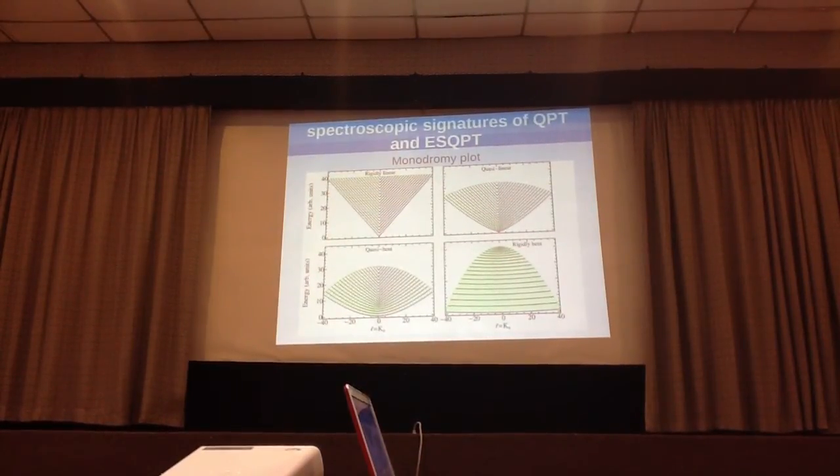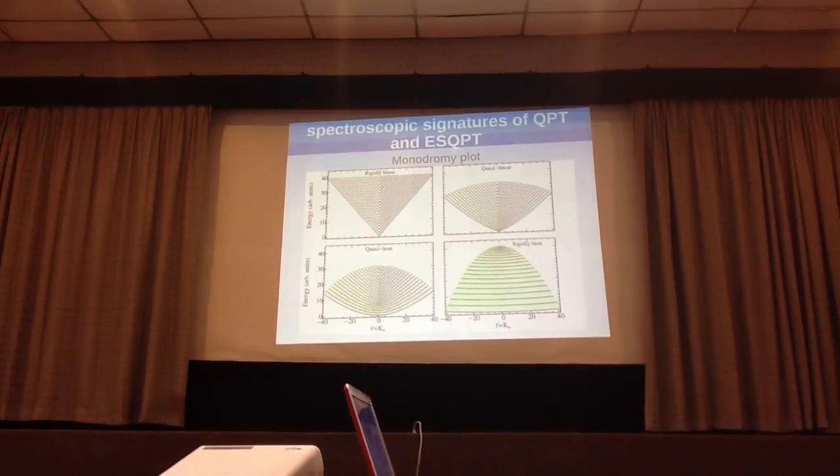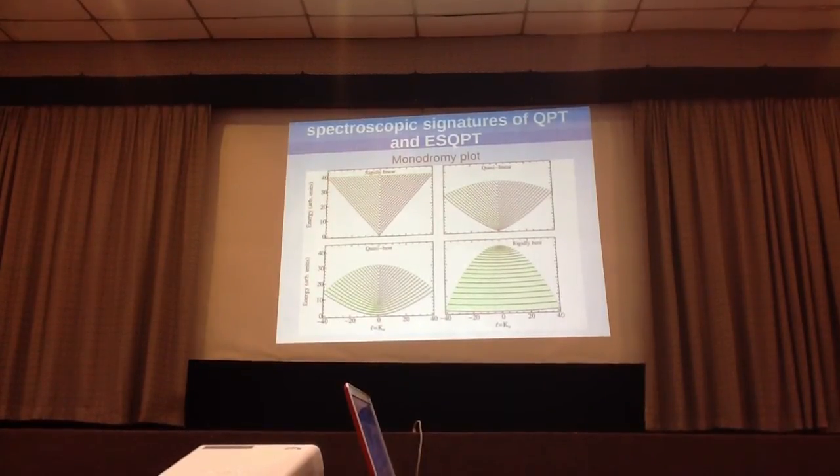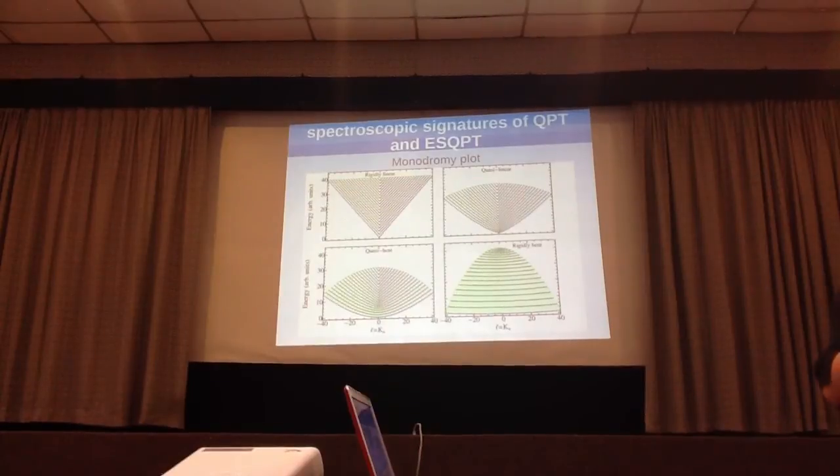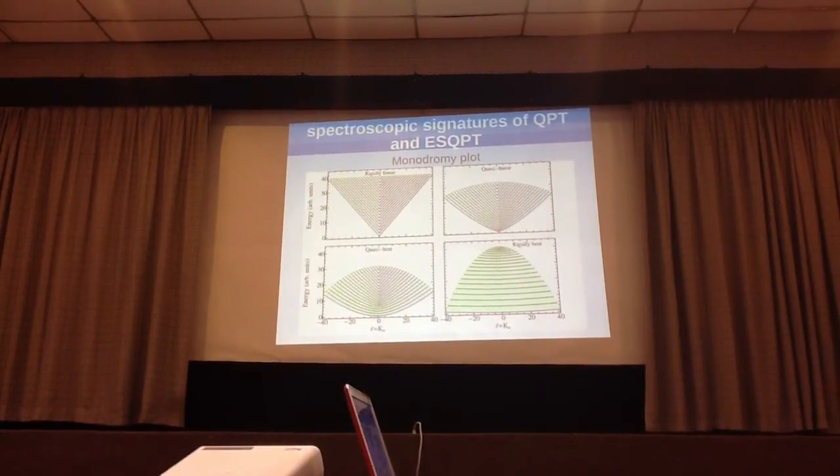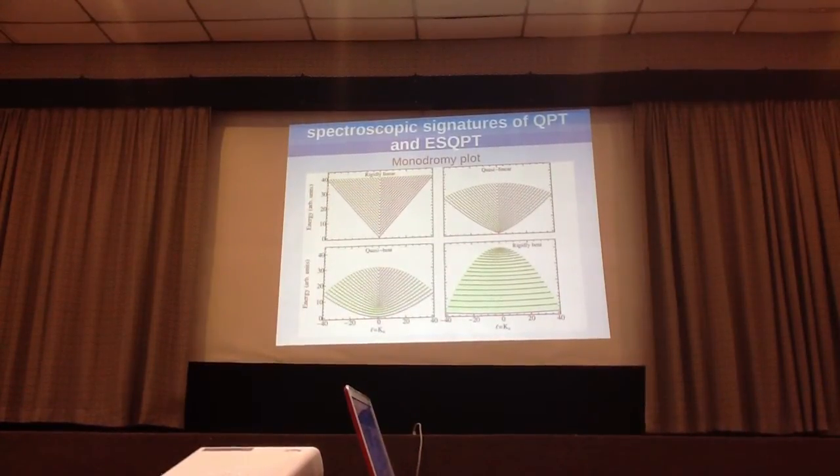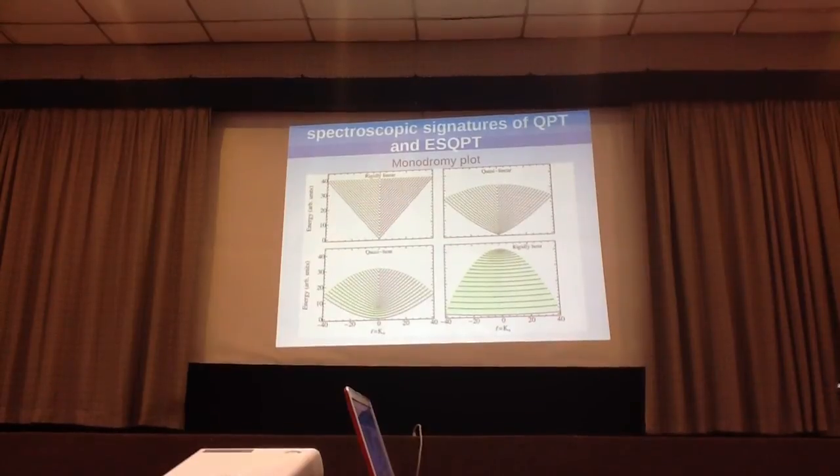For rigidly-bent, though, it's changed completely. It's a huge, wide parabola. But then again, the most interesting case here is quasi-bent, where the lowest energy shows a parabola, and then we have a definite change to the more linear behavior.